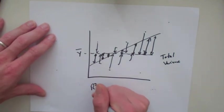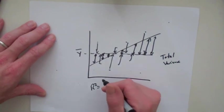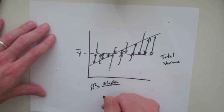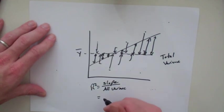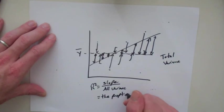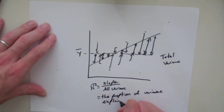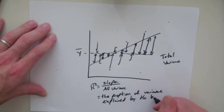r-squared again is variance explained by the slope of the line divided by all variance. In English, this translates to the proportion of variance explained by the best-fit line.